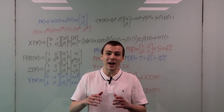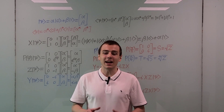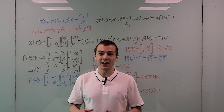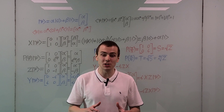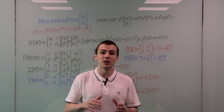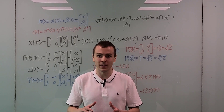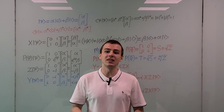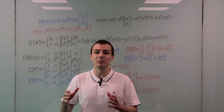Let's see how the Pauli matrices can act as single qubit gates. In this video, I'm going to be using Dirac notation, and I will also be using the matrix representations of operators. All of the matrix representations will be done in the Pauli Z eigenbasis.